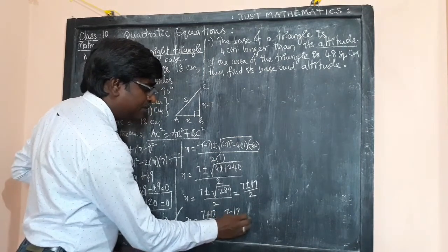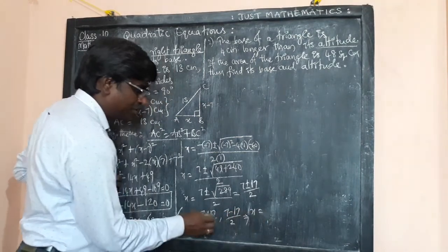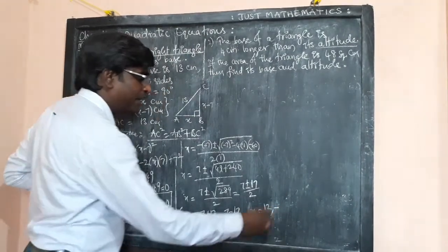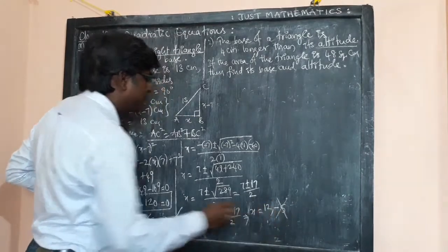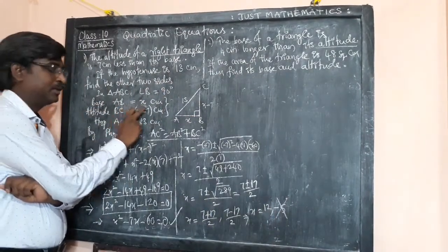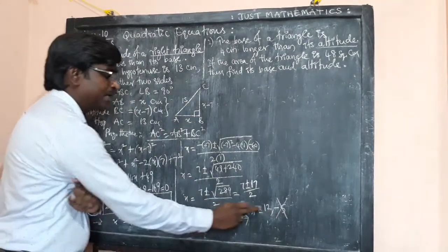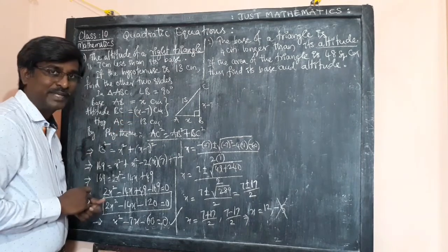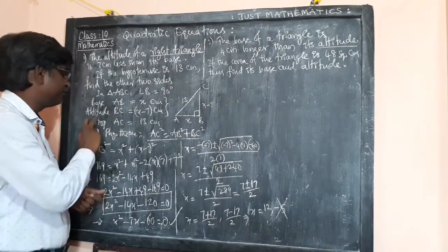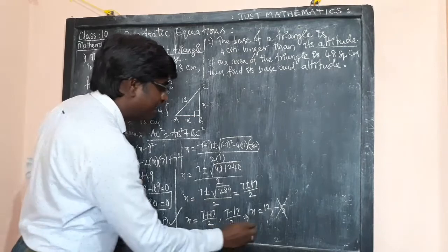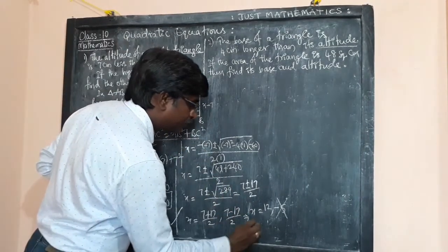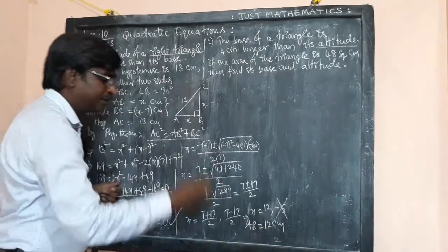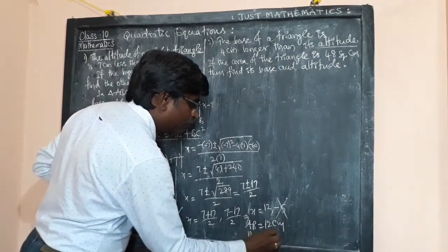So x equals either 12 or minus 5. Since x is the base, it cannot be negative, so x = 12. Therefore the base AB = 12 cm and the altitude BC = 12 minus 7 = 5 cm.